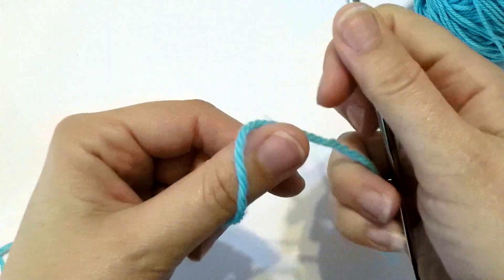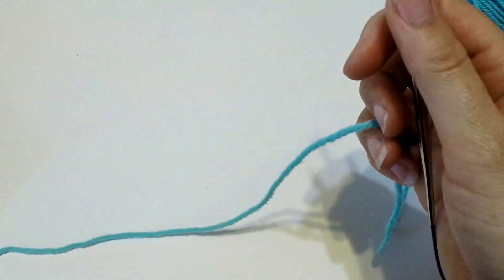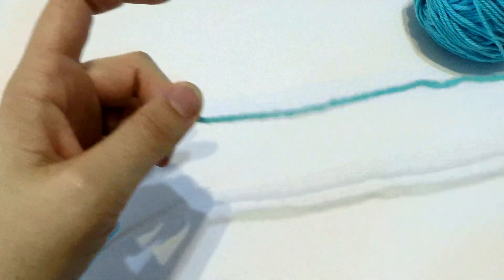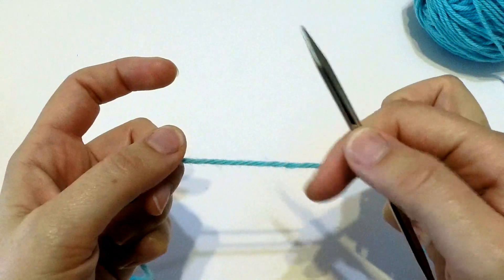We're going to start by making a slipknot. So I have the tail in my left hand, and the working yarn in my right hand, and the needle in my right hand.